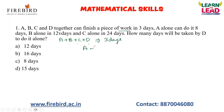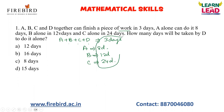A alone can finish it in eight days, B alone can finish it in 12 days, and C alone can finish it in 24 days. How many days will be taken by D to do it alone? Looking at the numbers 3, 8, 12, and 24, the LCM is 24. Let us consider the total work as 24. If we give this total 24 units of work to A, B, C, and D together, they complete it in three days, so in one day they complete eight units.